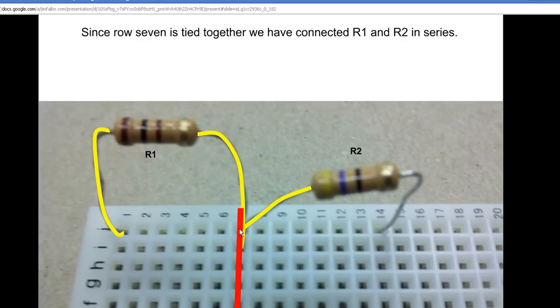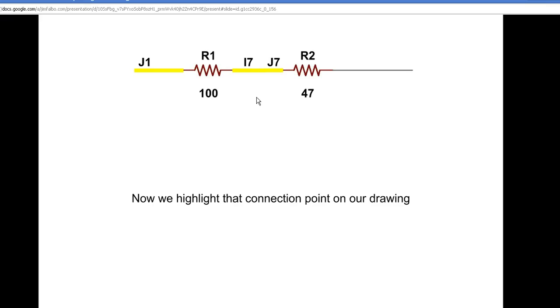That bus row 7 is a common bus, all tied together. So we have tied one leg of R1 with one leg of R2, and this drawing is now showing that. I've highlighted those two points together.